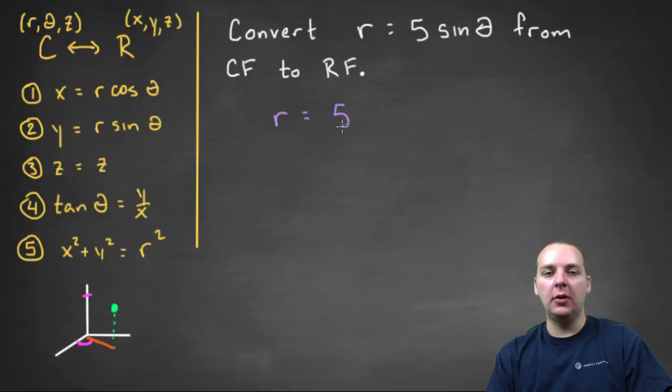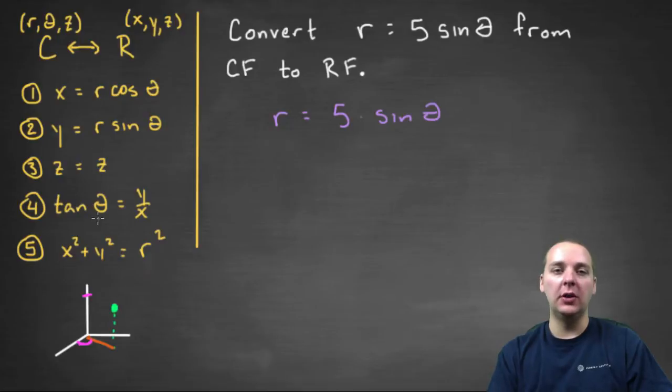So if we have r equals five sine theta, you've probably got the idea if you've been watching our last few videos of what we're going to try to do. We're going to try to take one of our old conversions that we've already derived and use it to turn it from r's and thetas into x's and y's and z's and that sort of thing.